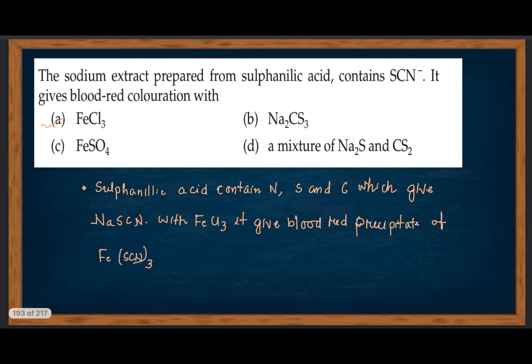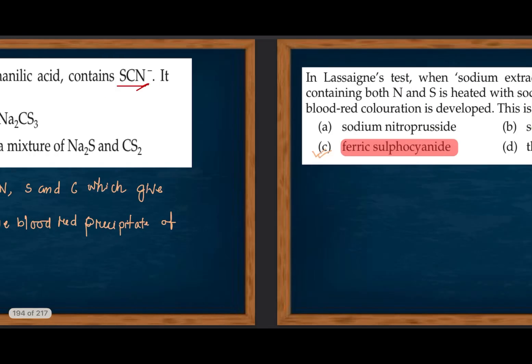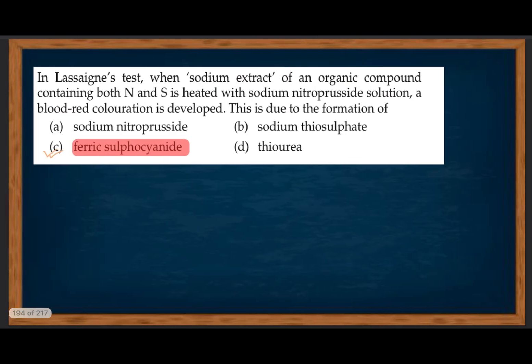The sodium extract prepared from sulfanilic acid contains SCN⁻. It gives blood red coloration — the sodium extract with SCN⁻ gives blood red coloration with FeCl₃.